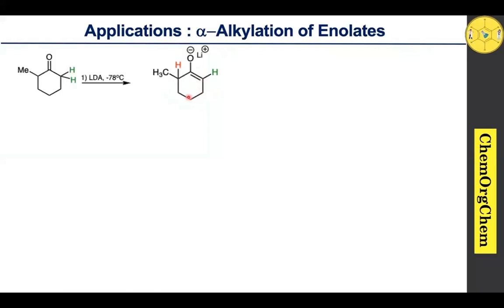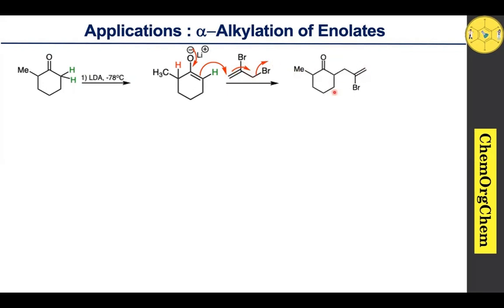In continuation, here we will see some more examples. When LDA readily takes the proton from the less hindered site, it generates the corresponding enolate ion, which then reacts with allyl bromide. The electrons move towards the carbon atom, followed by the pi electrons attacking the alkene carbon, then the electrons migrate toward the adjacent carbon, followed by kick-off of the bromine atom to yield the corresponding allylated product.